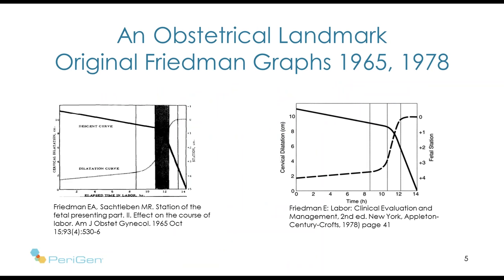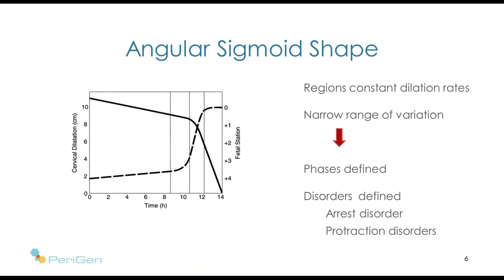All of the terminology and concepts used to define and describe labour are based on the validity of this angular S- or sigmoid-shaped curve. There are three regions with fairly constant rates of dilation, shown by three straight lines, which enabled us to define phases of labour. Transitions between those phases were fairly abrupt, meaning we could define the number of centimeters at which active phase or the deceleration phase began. Based on this, protraction and arrest disorders were defined according to the phases and expected rates of dilation.